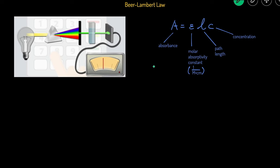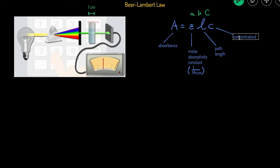The equation associated with Beer's Law is A = ELC, sometimes written as A = abC. A is absorbance and has no units. E is the molar absorptivity constant with units of 1/(molarity·cm), and it's specific to a solution so you can use it to identify the solution. L is the path length — how long the vial is — and unless given, it's typically 1 cm. C is the concentration of the solution in units of molarity.